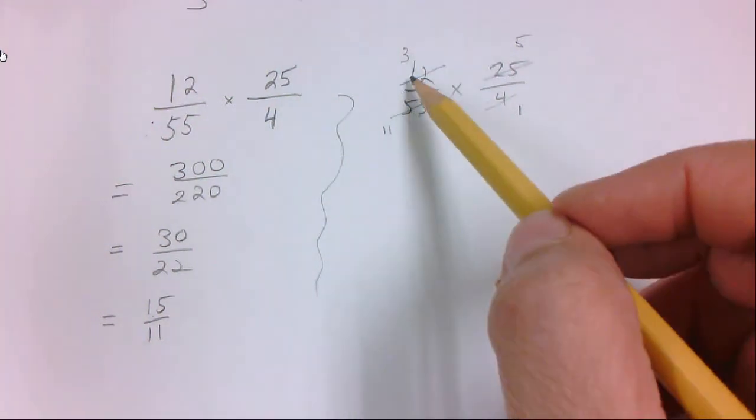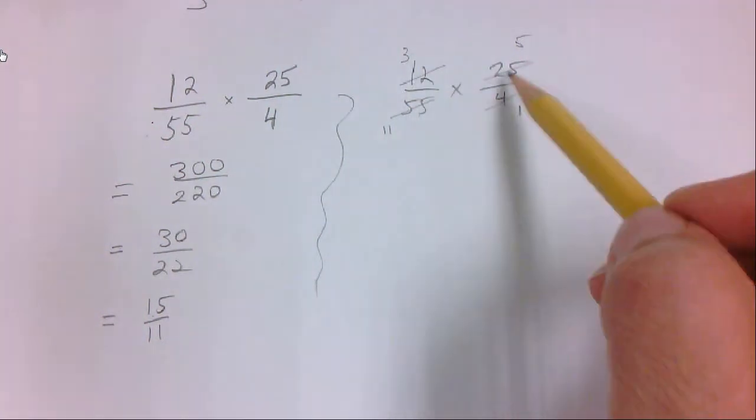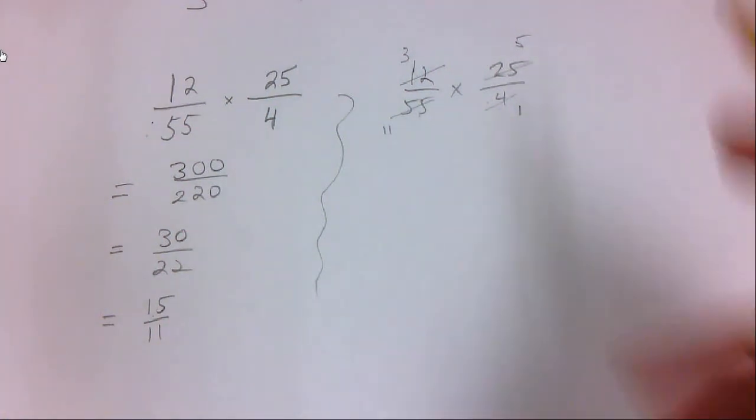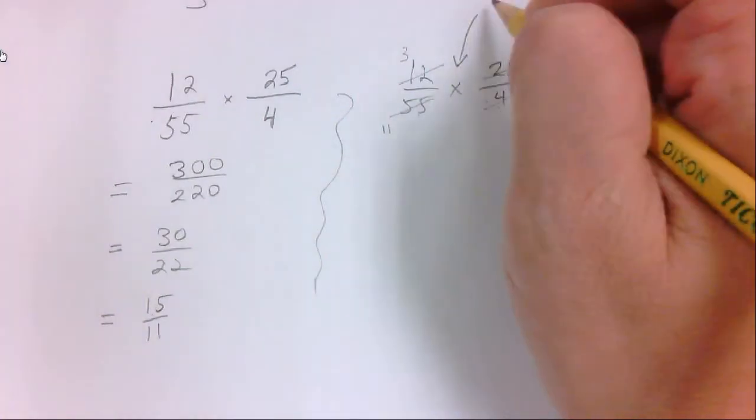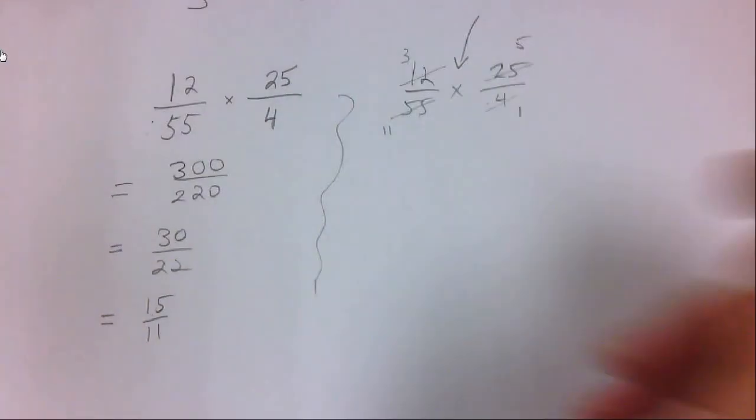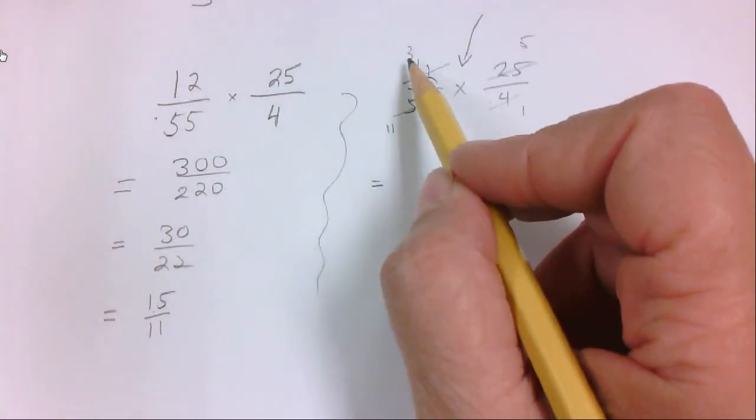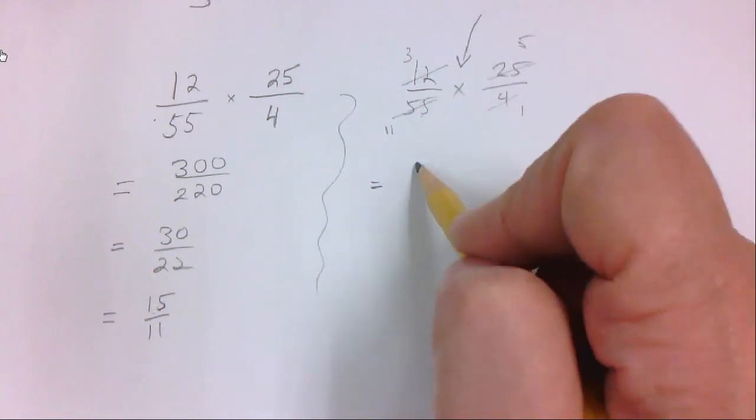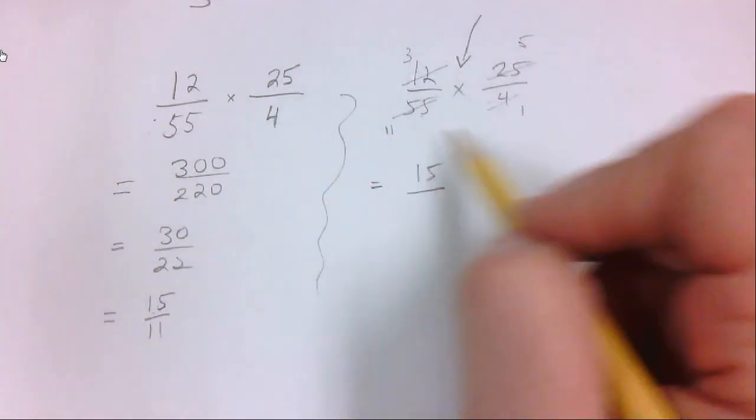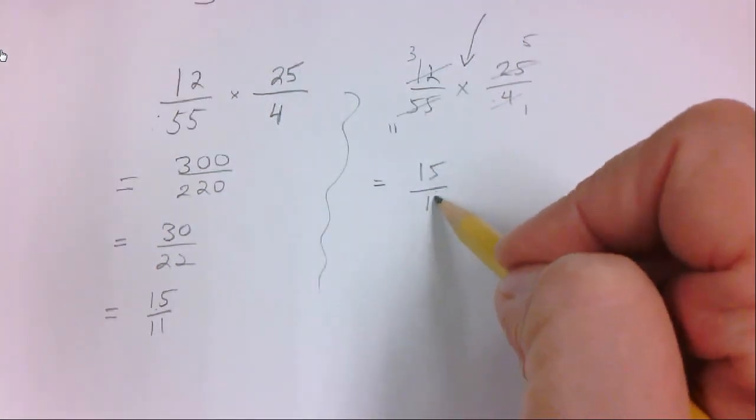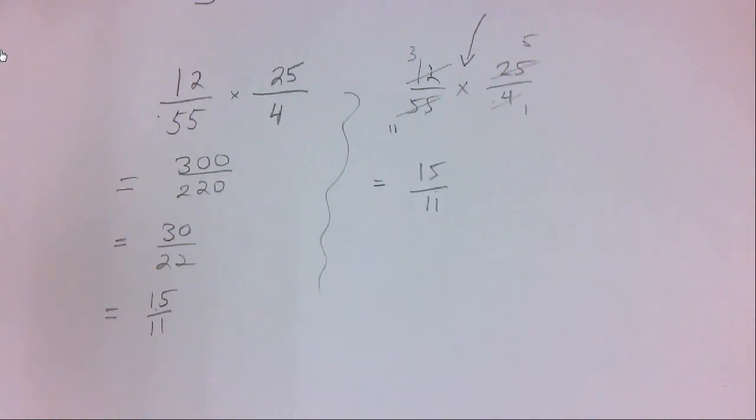I just reduced it, numerator and denominator, from different fractions, but it doesn't matter as long as you have multiplication. And so that is equal to... Now, I just multiply straight across. I'm left with 3 times 5, 15, and 11 times 1, 11. Done.